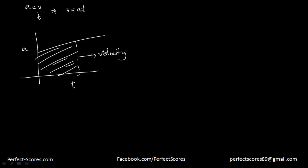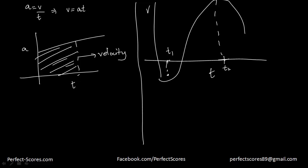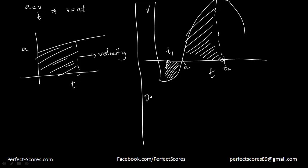Let me show you in a formal way. Suppose you have this as your velocity and time graph with some curve, and you want to find out the distance or displacement travelled from t1 to t2. The area under the graph between t1 and t2 will represent the distance or displacement, which equals the integral of v·dt.